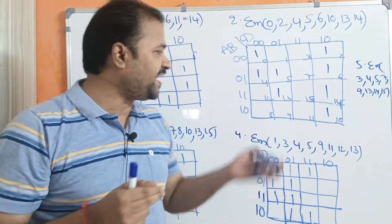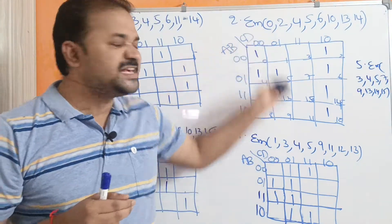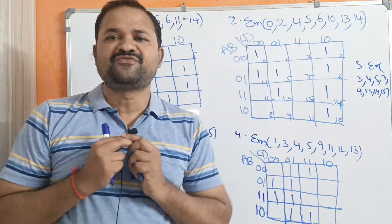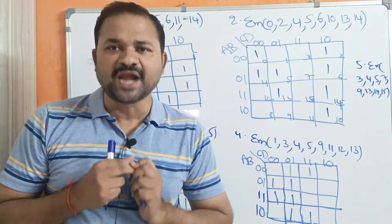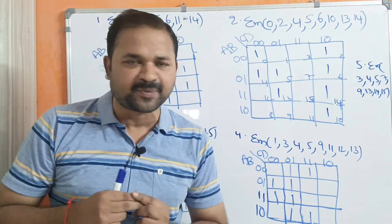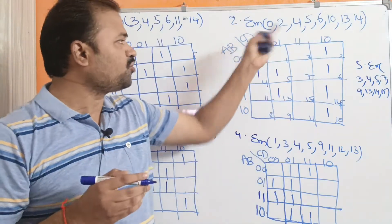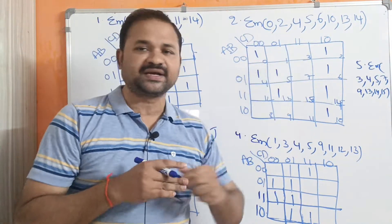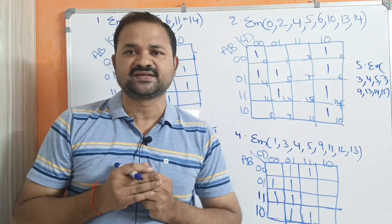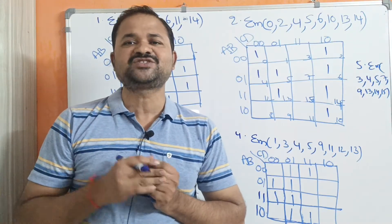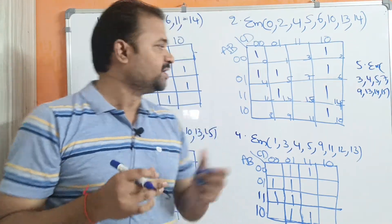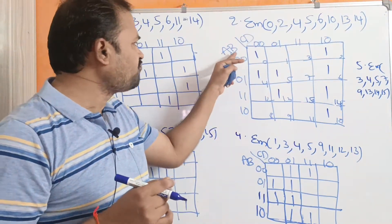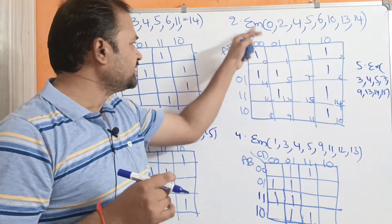Let us simplify these 5 Boolean expressions with the help of a 4-variable Karnaugh map. If we have 4 variables, then totally we will get 2 power 4 cells or squares as well as 2 power 4 minterms. This is a 4-variable Karnaugh map. Here we have 4 variables: A, B, C, D.